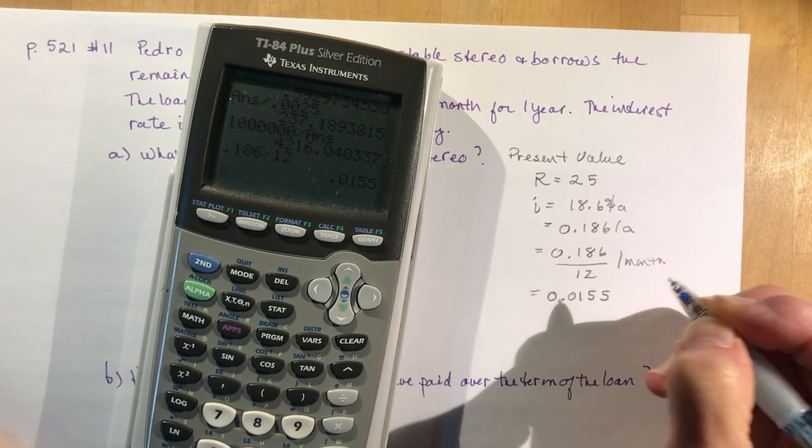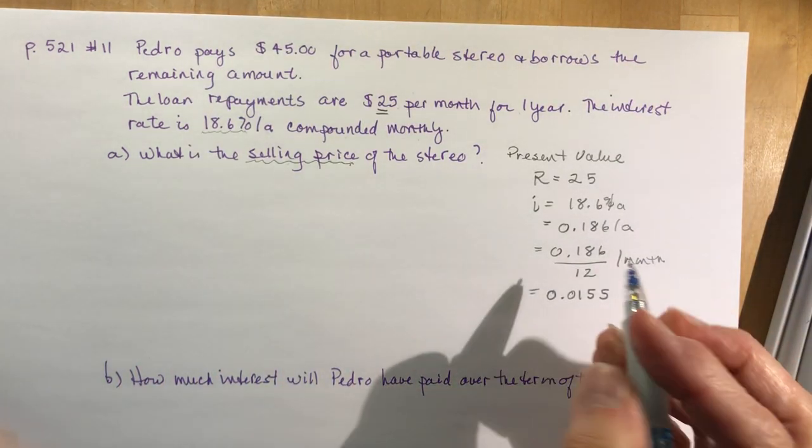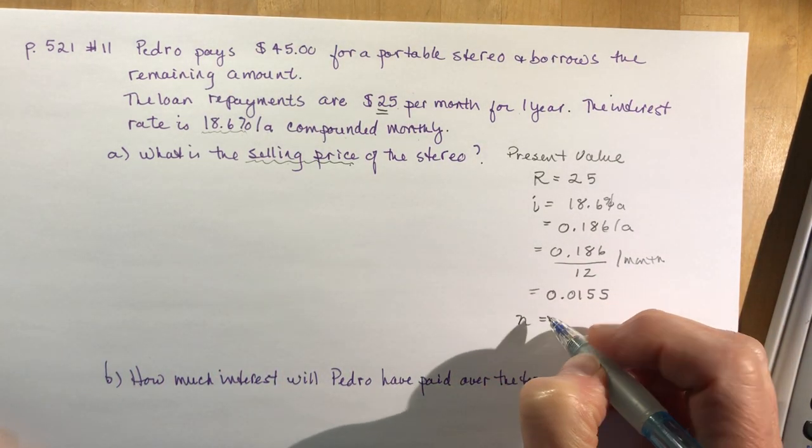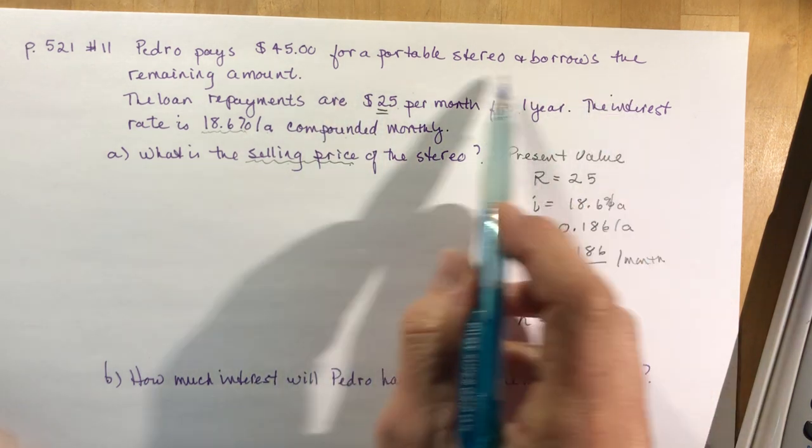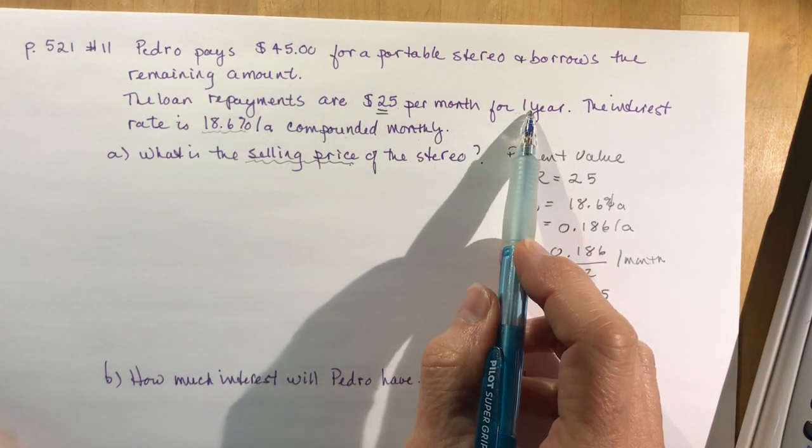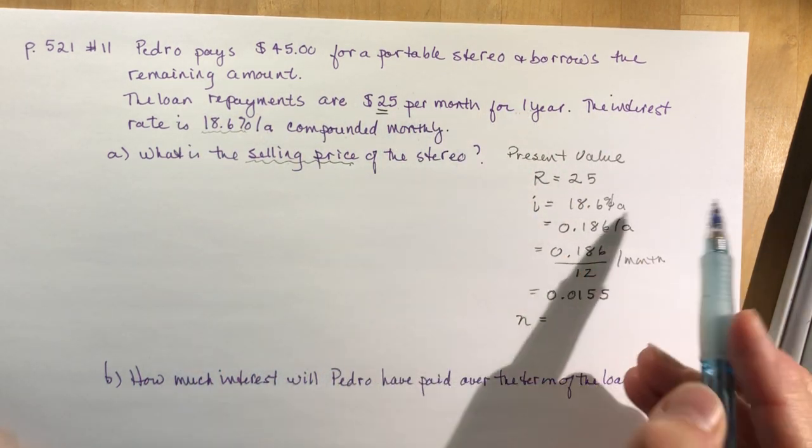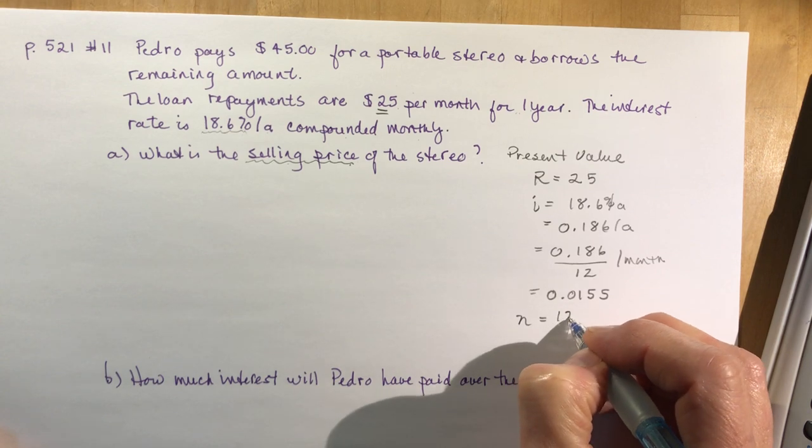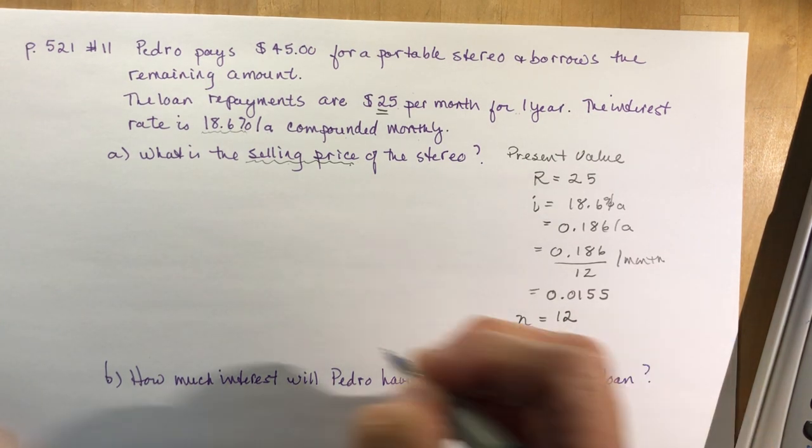I think that divides up nicely. 0.186 divided by 12 is 0.0155, that's my i. And what is my n going to be? He borrows the money for one year and it's monthly, so I have 12 payments to make.